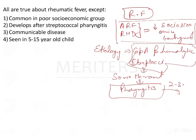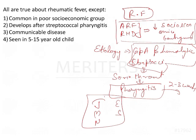After 2 to 3 weeks of this infection, other symptoms appear. The major criteria for this disease can be categorized using the mnemonic JONES: J is joint pain or arthritis, O is carditis, N is subcutaneous nodules, E is erythema marginatum, and S is the neurological manifestation, Sydenham's chorea.